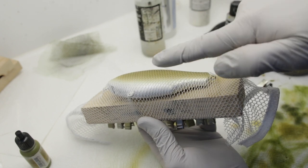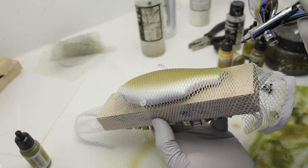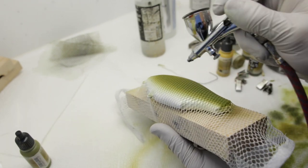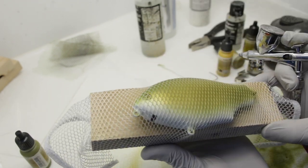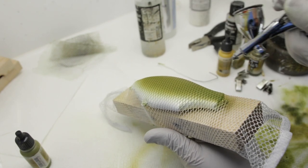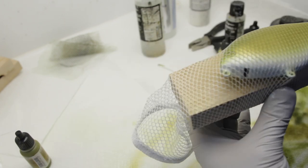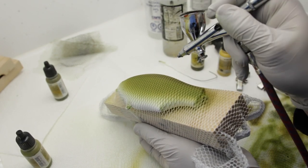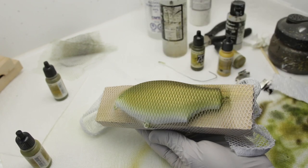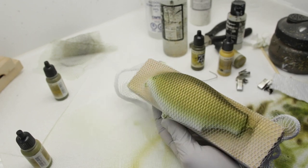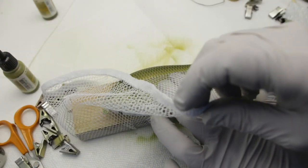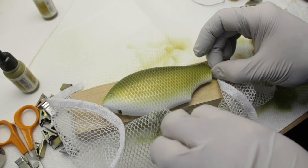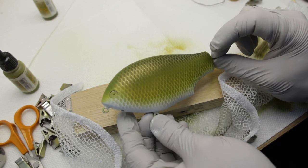Next we're going to start shading our scales. I'm actually going to do this in two different tones of green, which will add to the realism of the paint job. What you want to do is you want to come from a fairly low angle from behind the lure. This will make the paint land on the front end of the scale, leaving the back exposed with the previous color, which is going to be gold in my case.